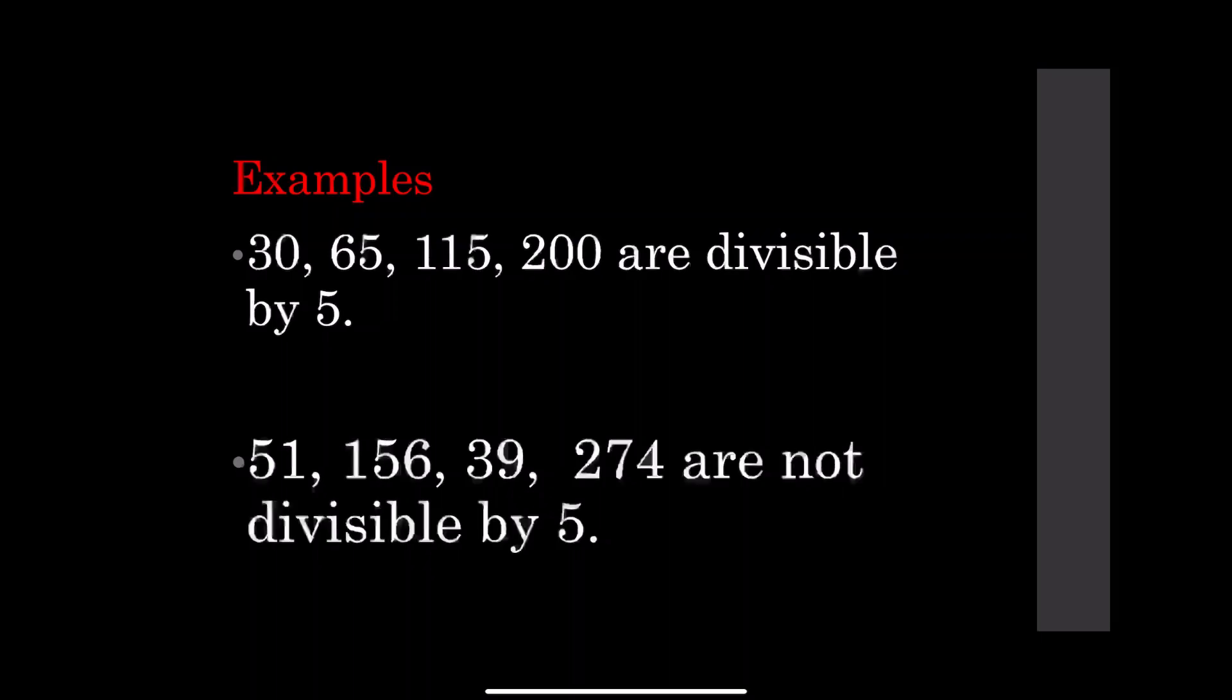These numbers are divisible by 5. Why? Because 30 ends with 0, 65 ends with 5, 115 ends with 5, and 200 ends with 0. So they are divisible by 5. Now the numbers 51, 156, 39, and 274...